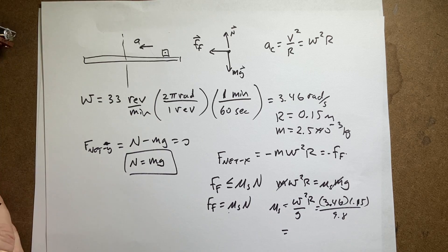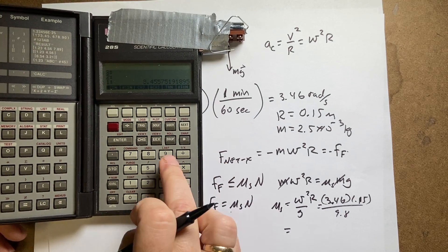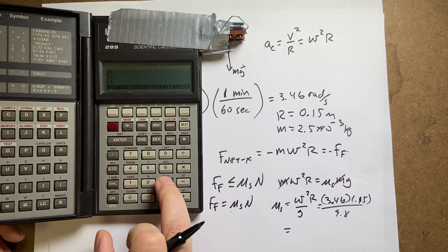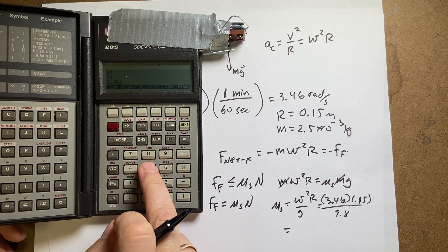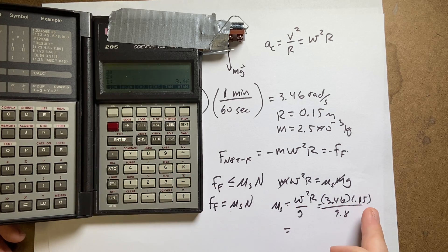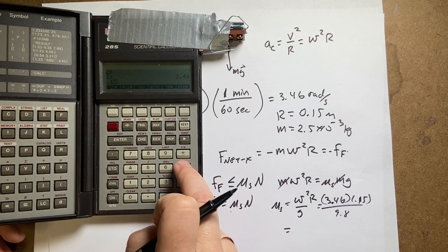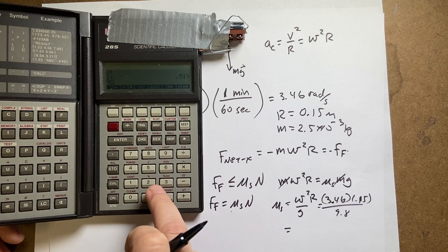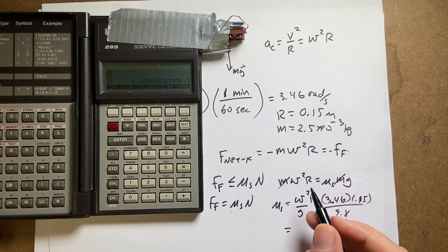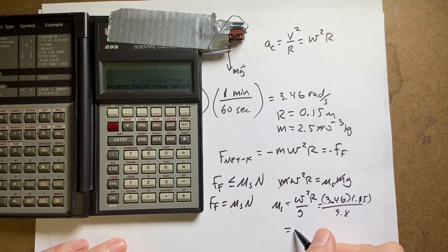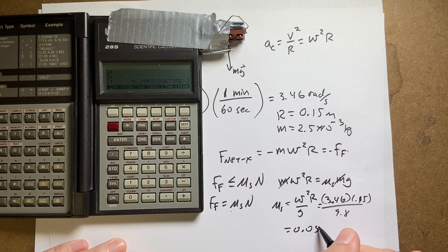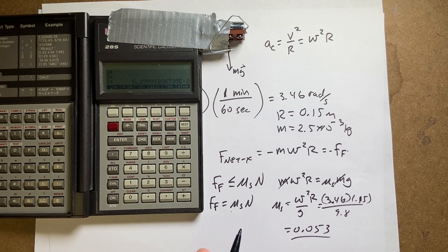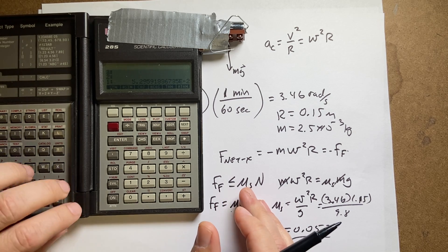If I put that in my calculator, 3.46 squared times 0.15 divided by 9.8, I get 0.183. So I do not need very much friction to keep that thing on the table.